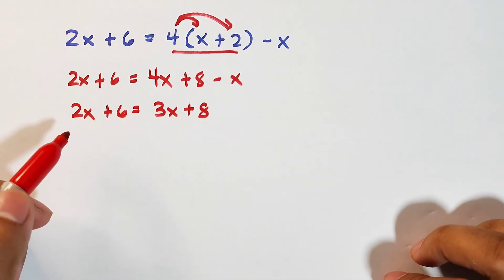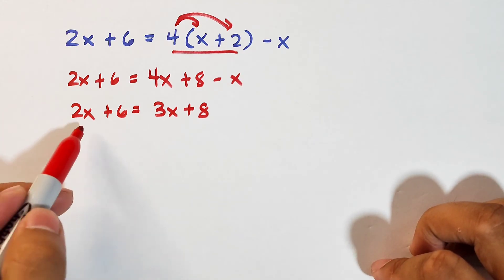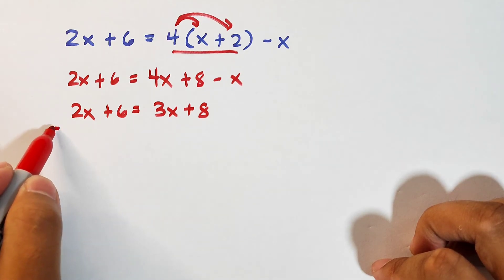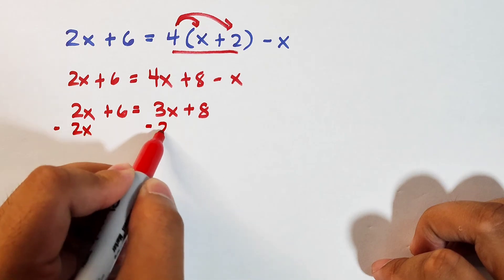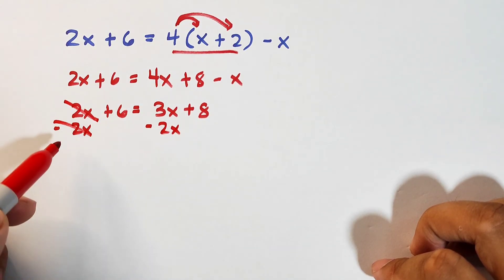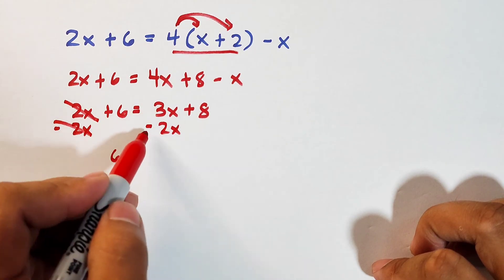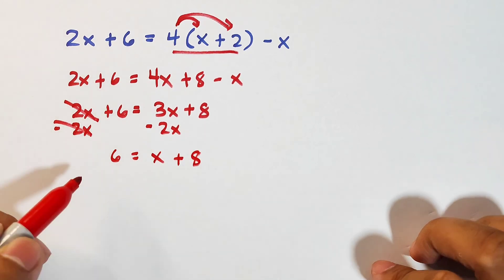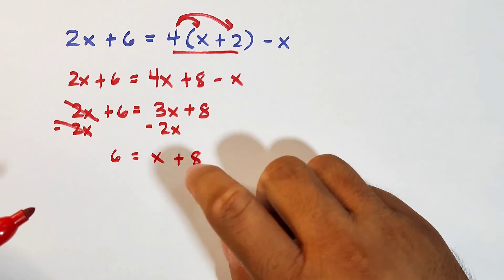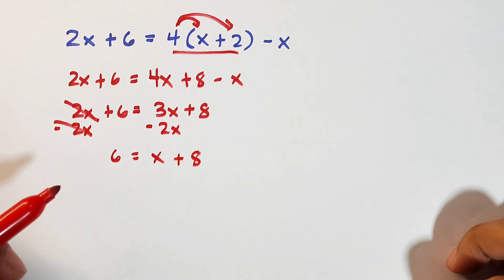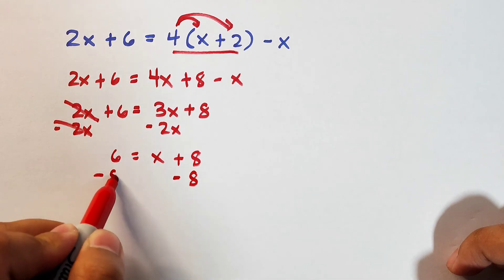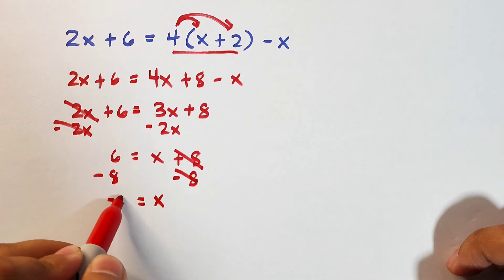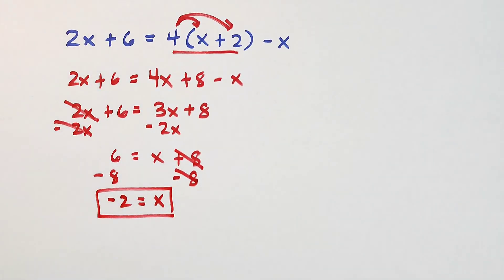What's next is we need to isolate the variables from the constants. Subtract both sides by 2x — the 2x terms cancel out, giving 0. We have 6 is equal to 3x minus 2x, which is x, plus 8. Now eliminate positive 8 using its additive inverse — subtract 8 from both sides. This gives 0, so x is equal to 6 minus 8, which is negative 2. As you can see, this is the value of x.